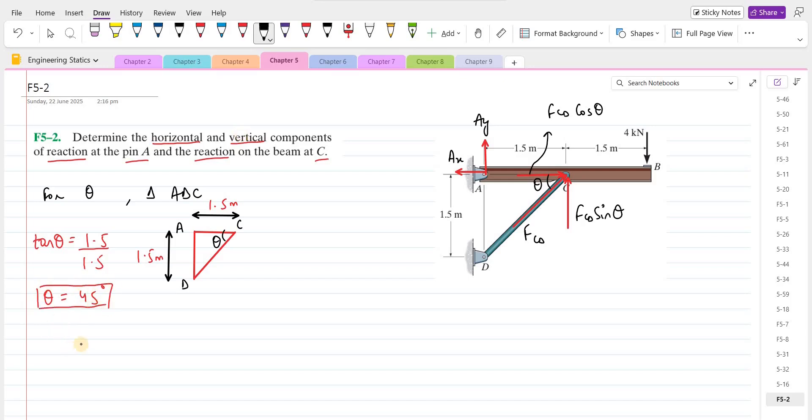Now we can apply our equations of equilibrium. My first equation is summation of moments at point A equals to 0. I am considering counterclockwise direction as positive. Since the line of action of Ay and Ax is passing through point A, these two forces do not have any momentum with respect to point A. The vertical component of FCD force, which is FCD sine theta, is trying to rotate the beam in counterclockwise direction about point A. So the moment produced by this FCD sine theta will be taken as positive.